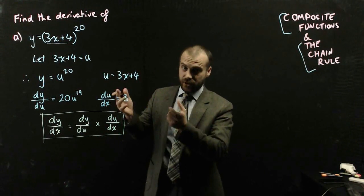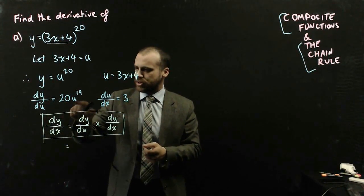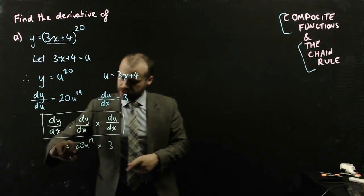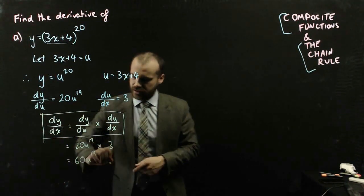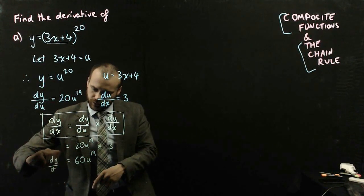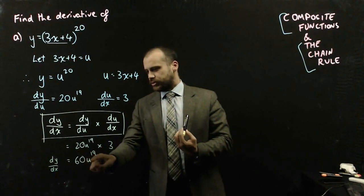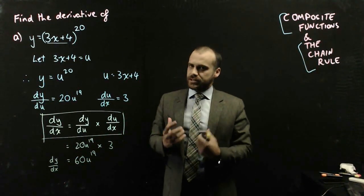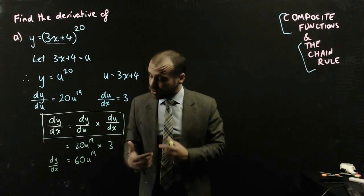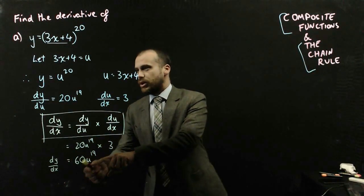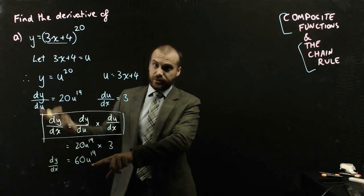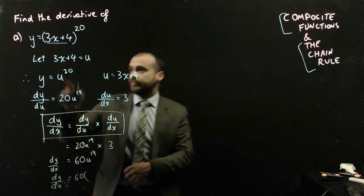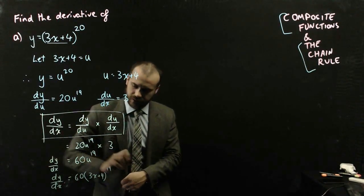Using the chain rule: dy/du is 20u to the 19, and du/dx is 3, so I'm left with 60u to the 19, which is dy/dx. Now, if you're paying attention, you'll notice that's the derivative of y with respect to x, not with respect to u, so we need to get rid of that u. We can do that because we know u is actually 3x plus 4. So the derivative of y with respect to x equals 60 times (3x plus 4) to the power of 19.